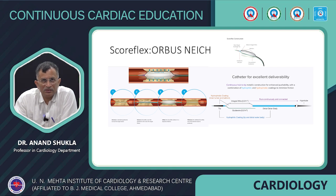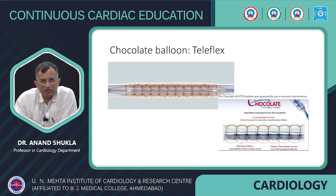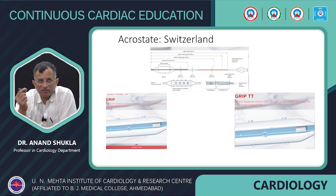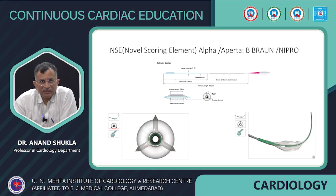The Scoreflex is marketed by Orbus Neich. The chocolate balloon is not available in India; its design features a pillow and bump arrangement meshed with a nitinol mesh, marketed by Teleflex. The Grip and Grip TT balloons have small nodules attached so the balloon will not slip from the lesion — particularly helpful for ISR and fibrotic lesions, with nylon blebs attached to the catheter. The NSE Alpha (Novel Scoring Element Alpha), marketed by B. Braun and Nipro, also has nylon blebs attached to the balloon at 120-degree intervals — sharp, three-dimensional, working as a cutting effect.